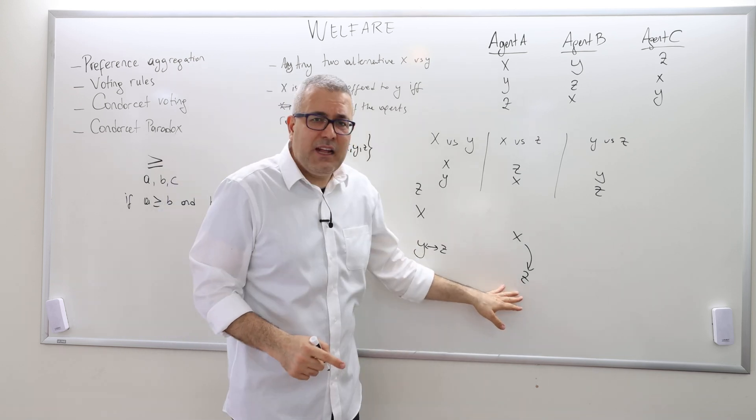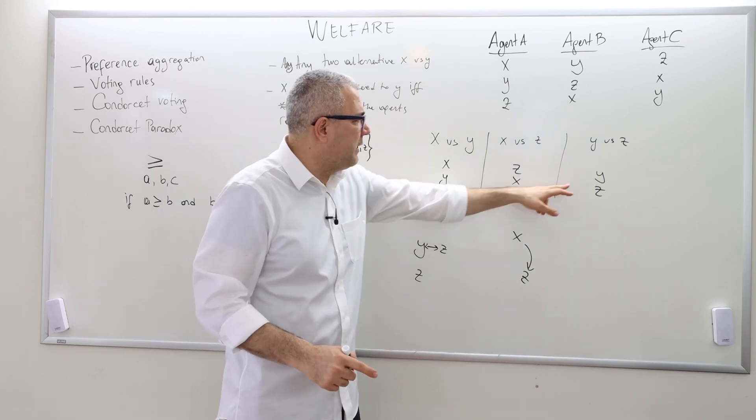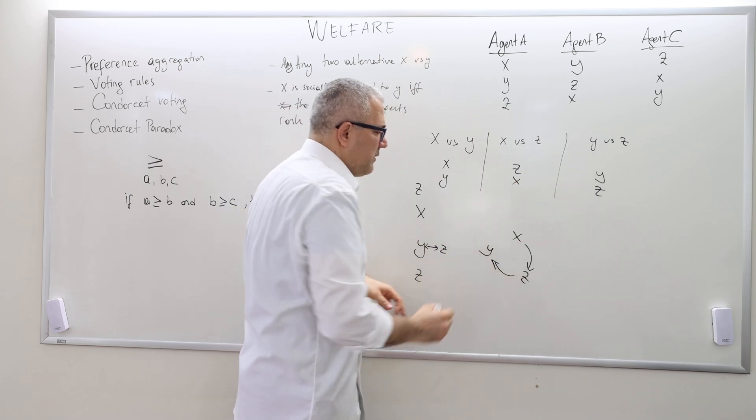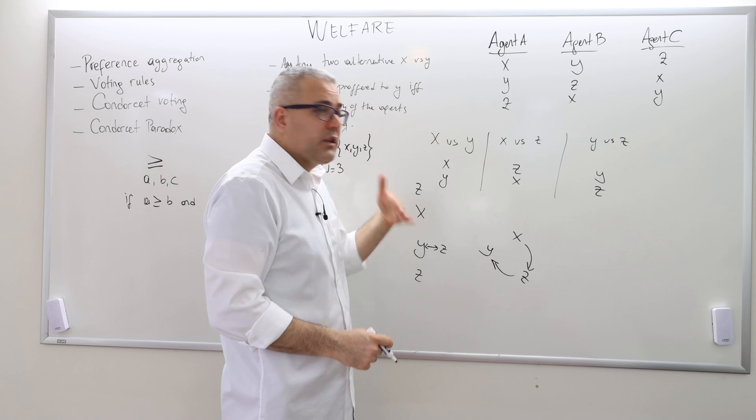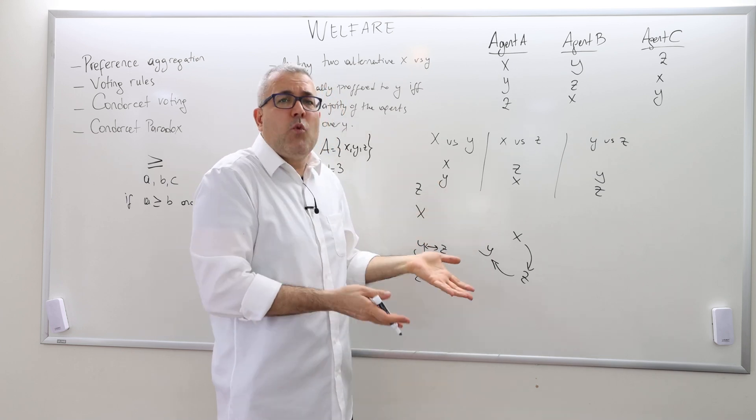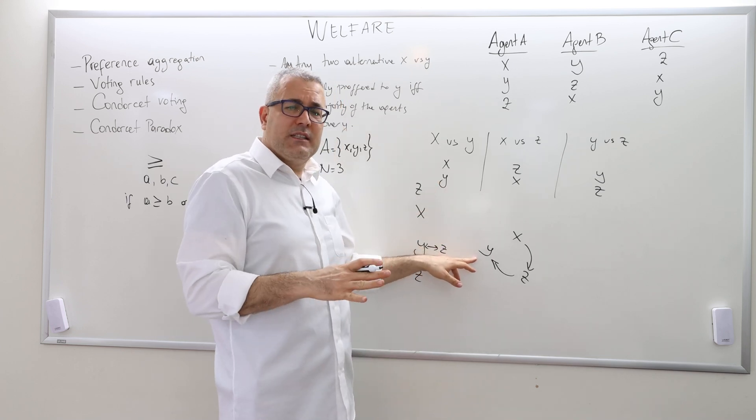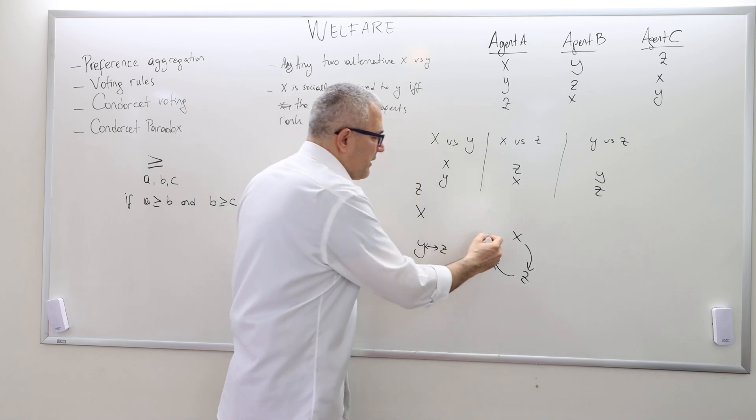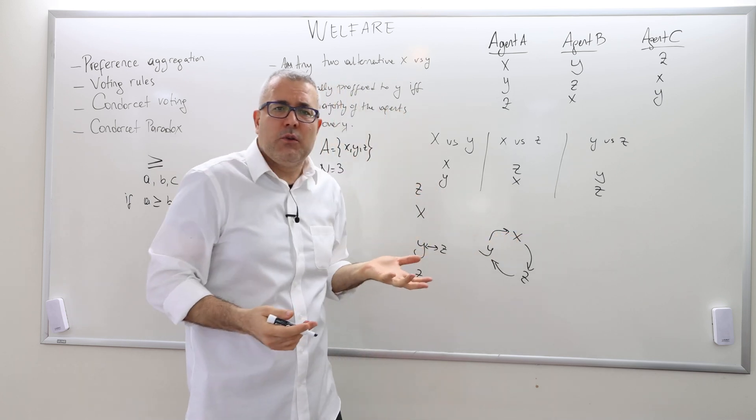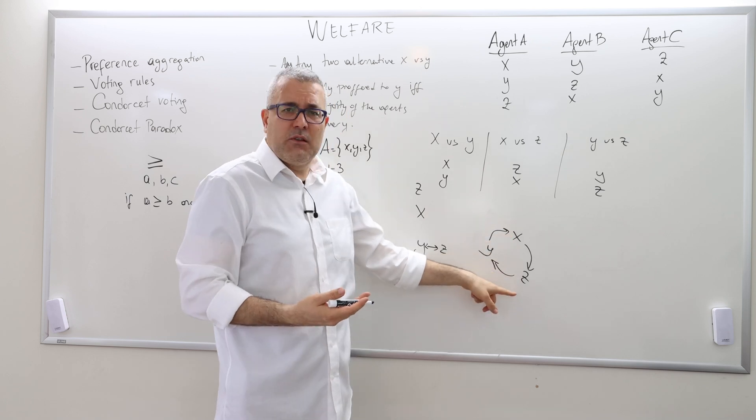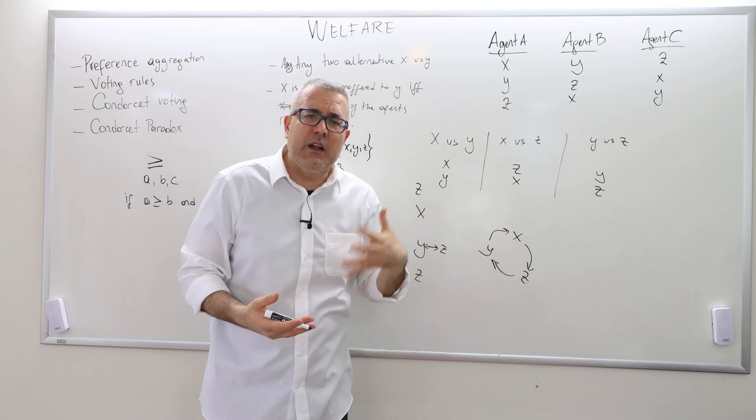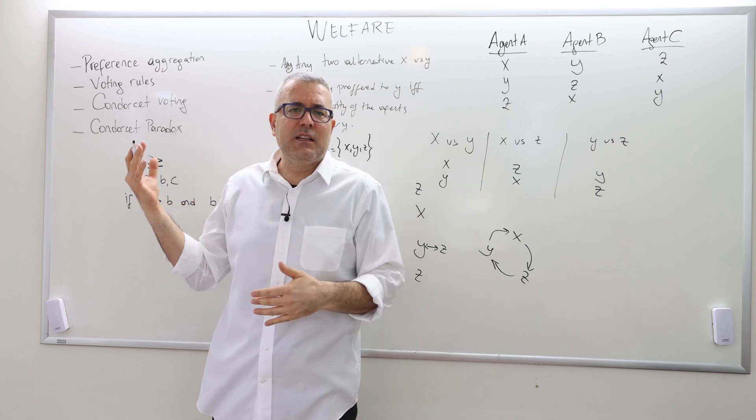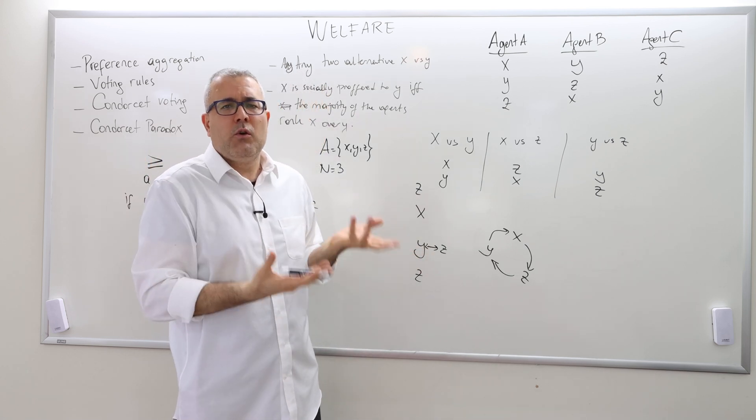But the thing is, Z is not the socially best alternative because Y is socially better than Z. So there's a better alternative socially. Well, okay, let's give them Y then. But no, we can't because Y isn't the socially best alternative because X is socially better than Y. So Y cannot be socially best. But we already said X is not the socially best alternative. So you see what I mean? We have this cycle, which we call Condorcet cycle. And this situation we call Condorcet paradox.